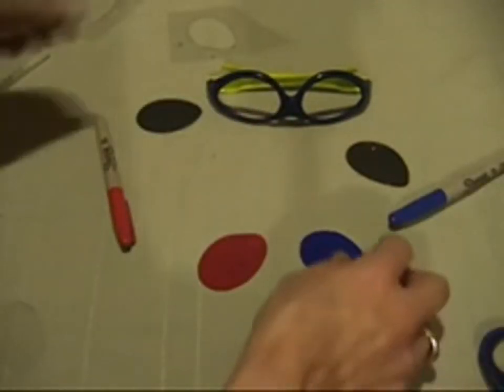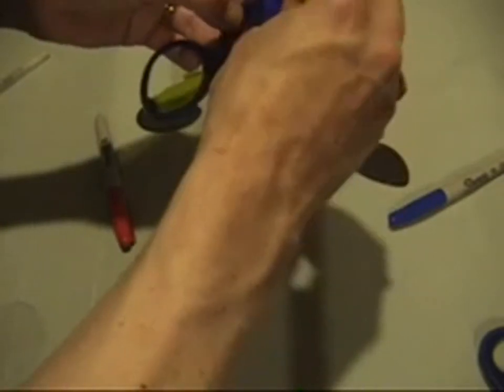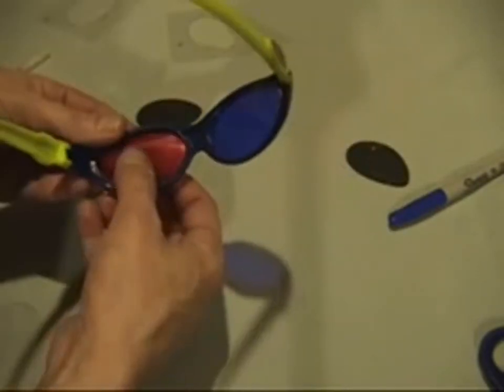Now simply pop your new colored lenses back into the frames. The blue will cover the right eye, and the red will cover the left.